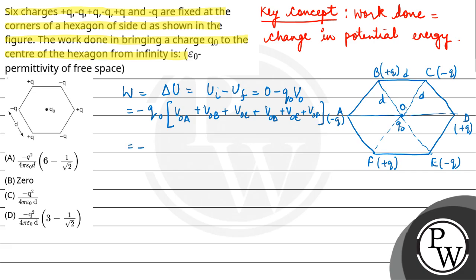This equals -Q₀[K(-Q)/D + KQ/D - KQ/D + KQ/D - KQ/D + KQ/D]. All the terms get cancelled, so work done is zero.